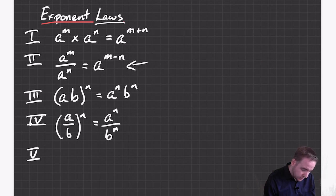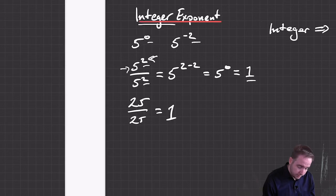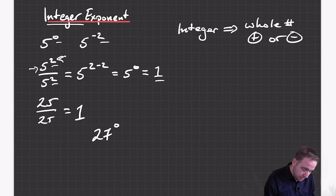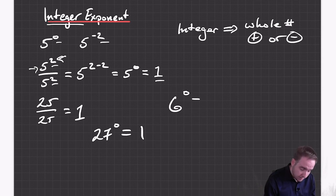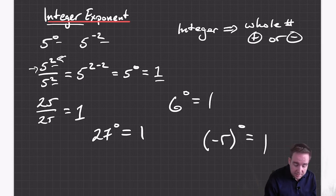So you can turn that into a new rule: any number raised to the power of zero is just equal to one. You can answer lots of questions really quickly. What is 27 to the power of zero? One. What is six to the power of zero? One. What is negative five to the power of zero? One.